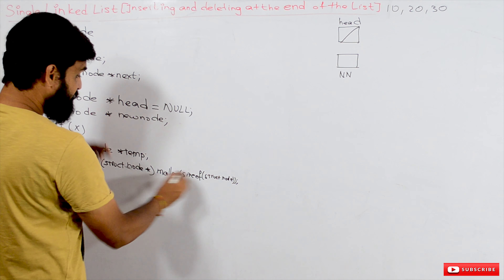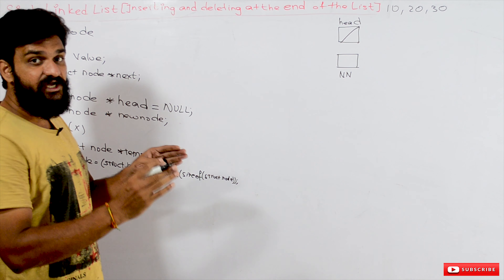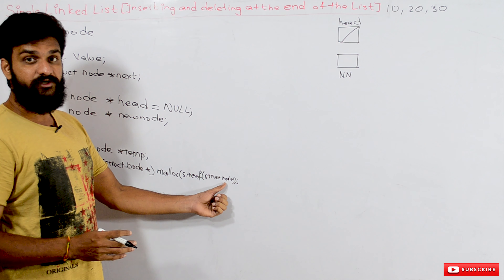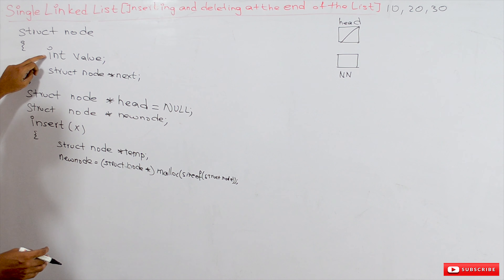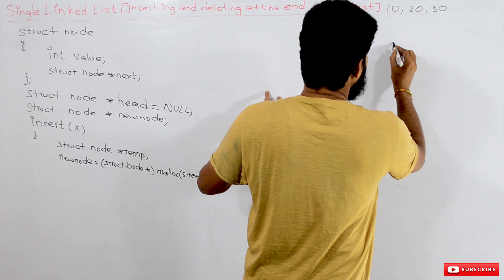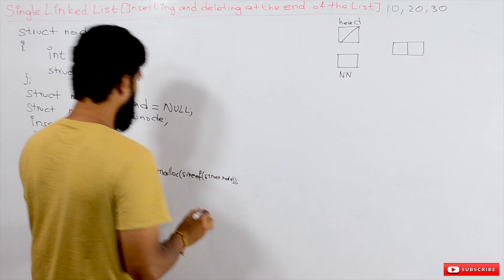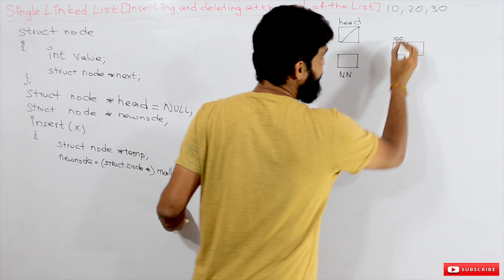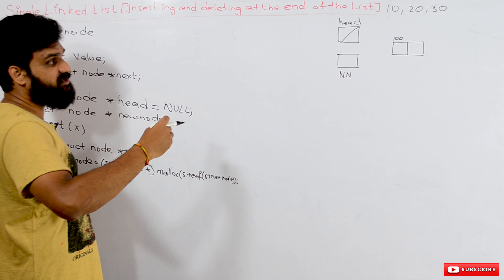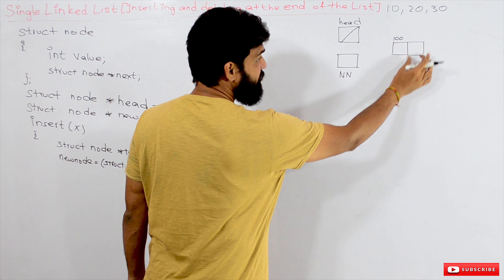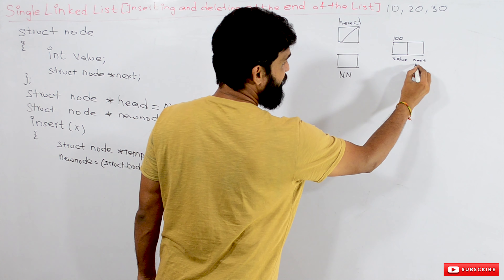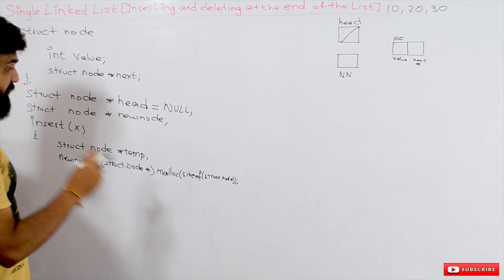We will insert elements 10, 20, and 30 into this linked list. Whenever we insert a node, we first have to create it. Before that, we create a temporary pointer variable capable of storing the address of a node.